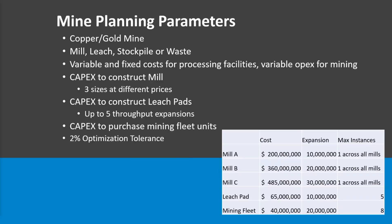First off, I've essentially built a model that is a copper-gold mine, so we're going to have a copper stream and a gold stream. I'm going to be using MineMax Scheduler for this because it's what I'm familiar with, but you could use other strategic planning tools to do this. We're going to have a mill and a leach as two different options for our material. You could also stockpile material to be reclaimed later, or we can send it to waste.